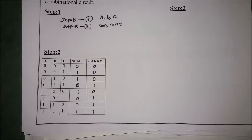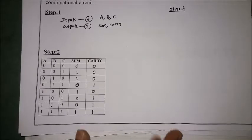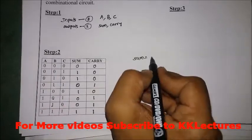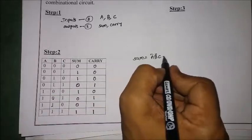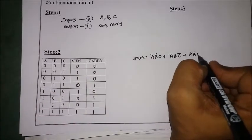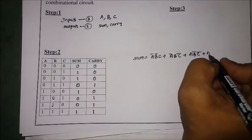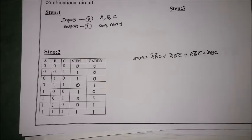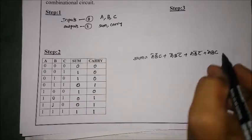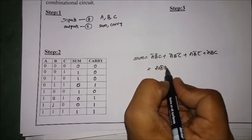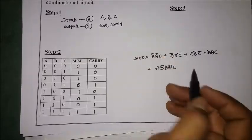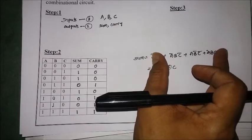The next step is designing the circuit and simplification. From the truth table I need to identify the expressions. Sum equals Ā·B̄·C + Ā·B·C̄ + A·B̄·C̄ + A·B·C. This sum has four product terms, and these four minterms are equivalent to A⊕B⊕C. So if I want to represent it using an XOR gate, I can directly use this expression. We can cross-verify by expanding it to get the above four terms.